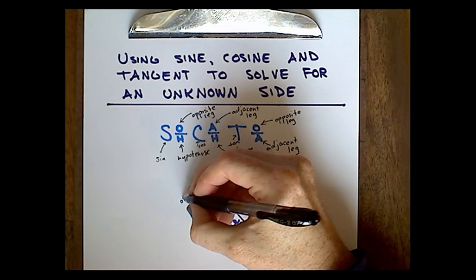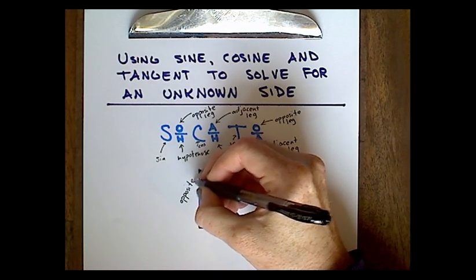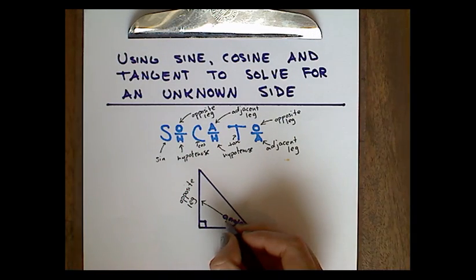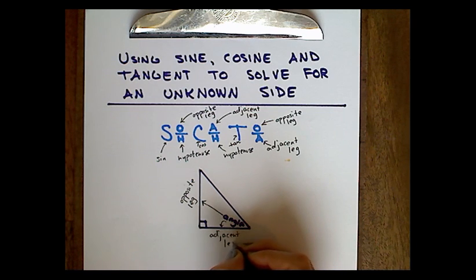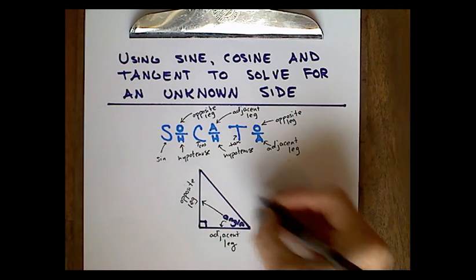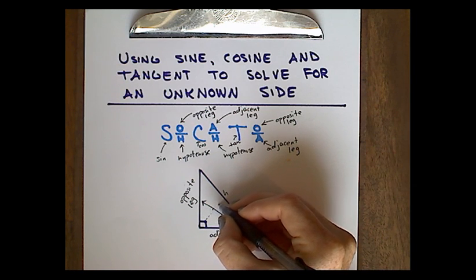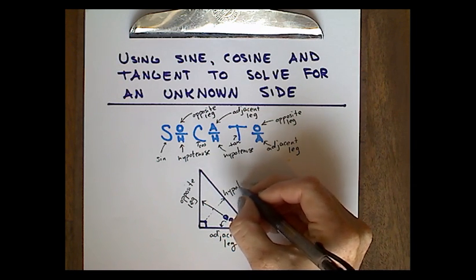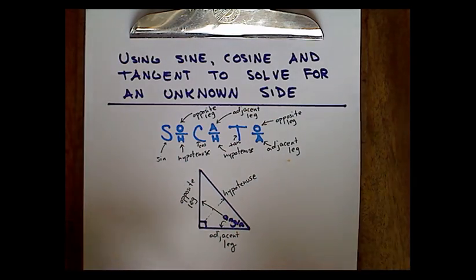How do we know which side is opposite, adjacent, and the hypotenuse? First we need an angle. The side opposite the angle is what we call the opposite. The leg adjacent to the angle is called the adjacent leg. And since there's only one right angle, we use the word hypotenuse to represent the side across from the right angle.